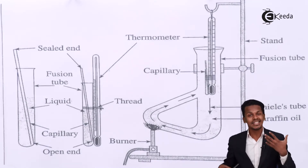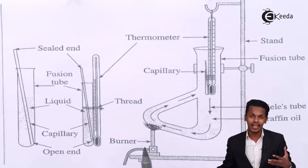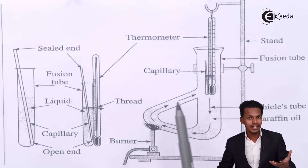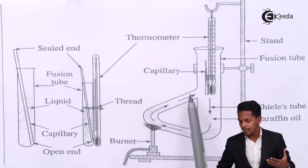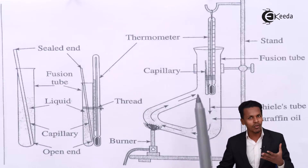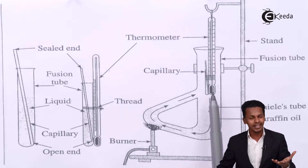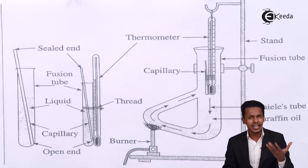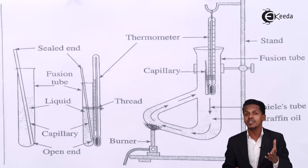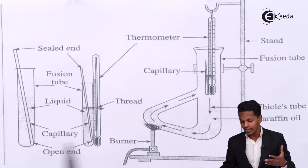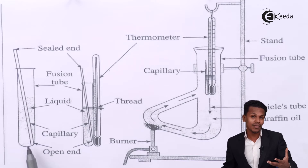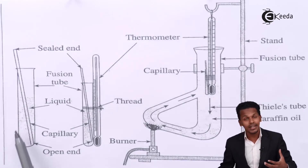This setup — the thermometer tied to the fusion tube containing the liquid and the sealed capillary tube — is placed in a liquid bath apparatus. We apply heat at the arm of the apparatus, and due to convection flow, the region where the liquid is present in the fusion tube gets heated. As the temperature keeps increasing, we observe continuous bubbling from the open end of the capillary tube.